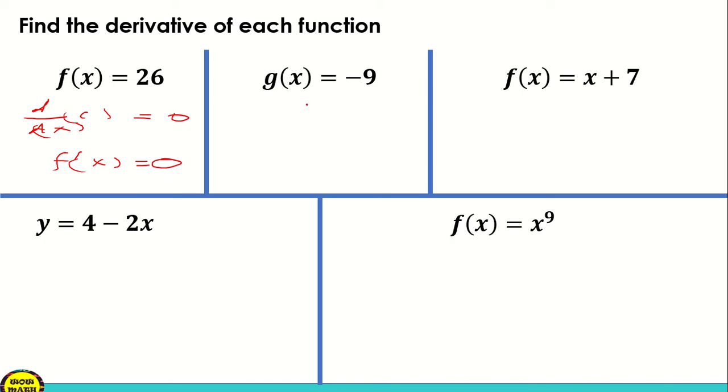dito sa pangalawang function natin, we have g(x) is equal to negative 9. So negative 9 is a constant. So therefore, pag kinuha natin yung derivative niya, g'(x) is equal to 0.